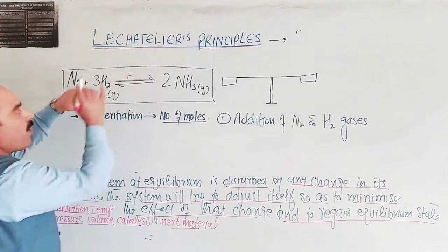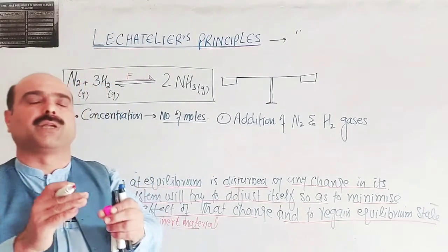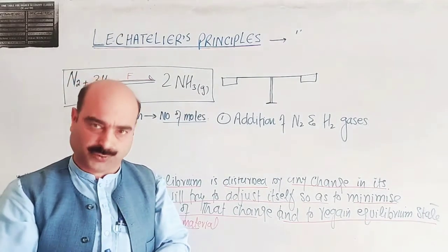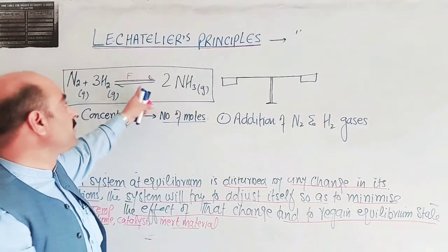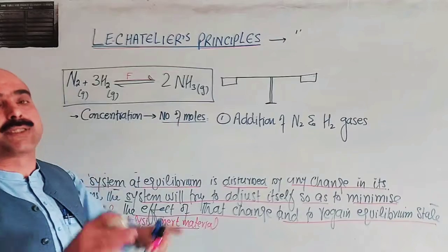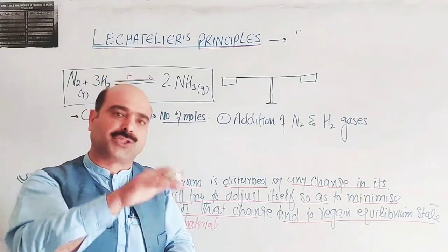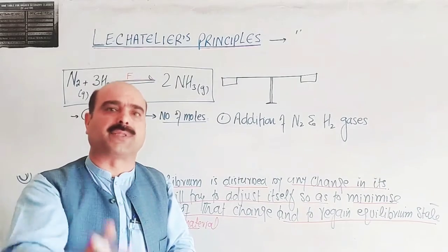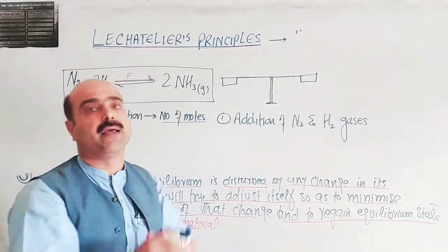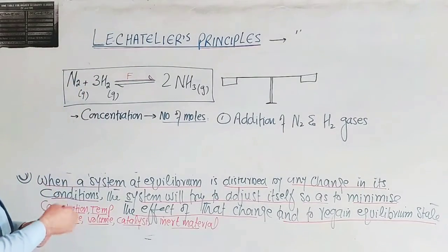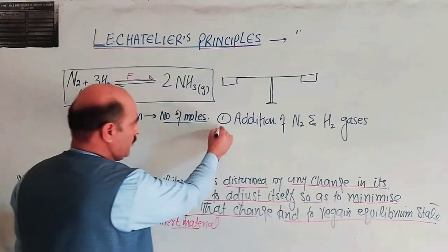At equilibrium, the rate of the forward reaction and the rate of the reverse reaction are the same. When we disturb this equilibrium by adding nitrogen and hydrogen, the forward reaction speeds up. Similarly, by removal of nitrogen and hydrogen gases, the concentration decreases, so the reverse reaction is favored to compensate.